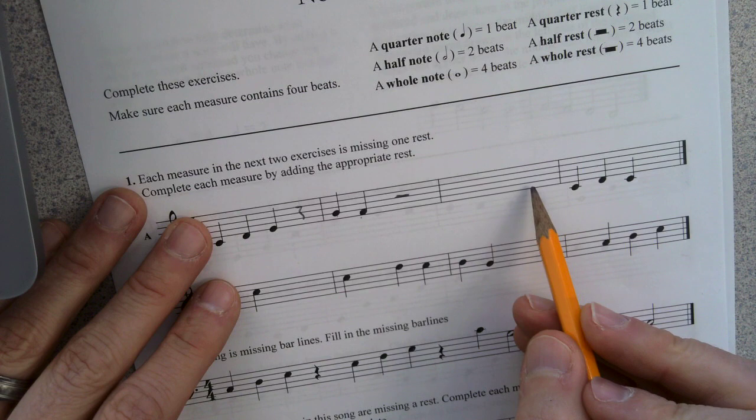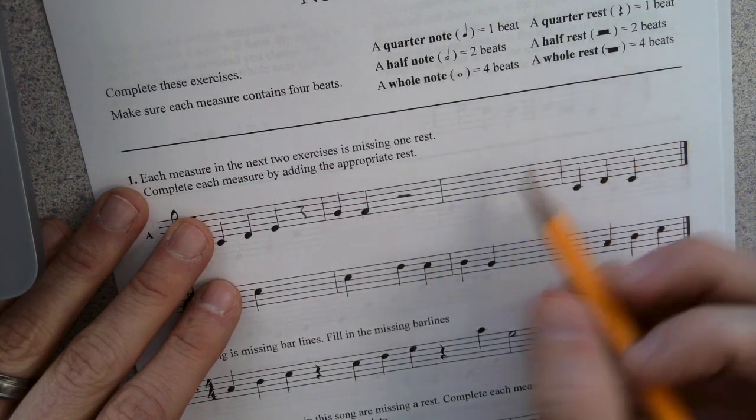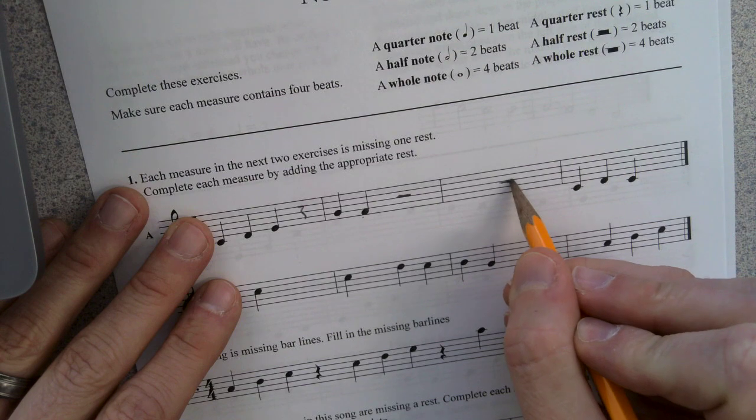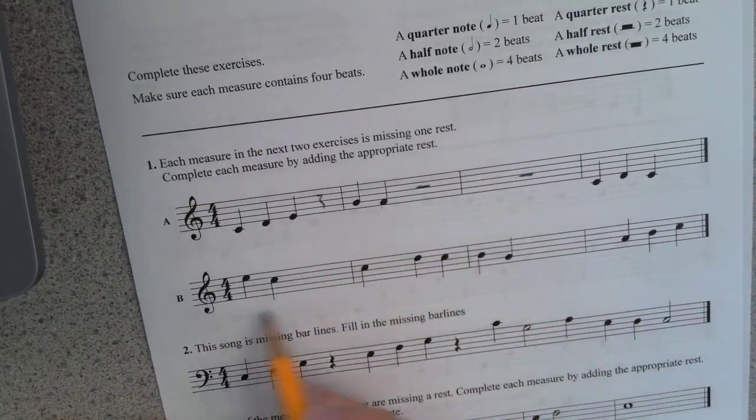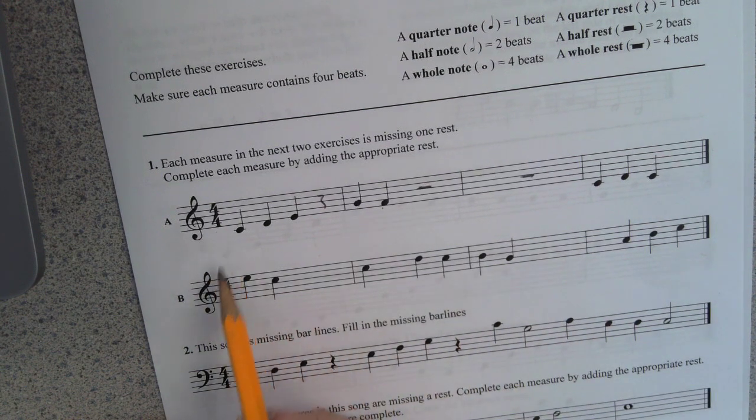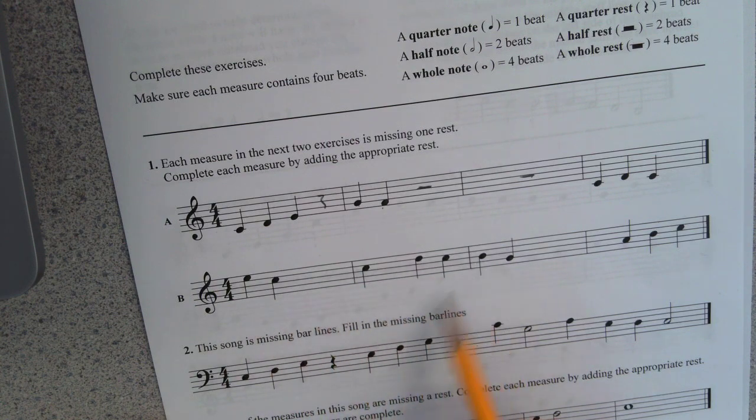I look up here and I see that a half rest is worth two beats. I'm going to draw that little dude right there. And I'm good to go. I don't have anything right here. So I need something that has four beats in it. Oh, look, a whole rest. Four beats. You got it. So that's how you do that one. That's how you do this one. Figure out how many notes are in the measure. It should be four.